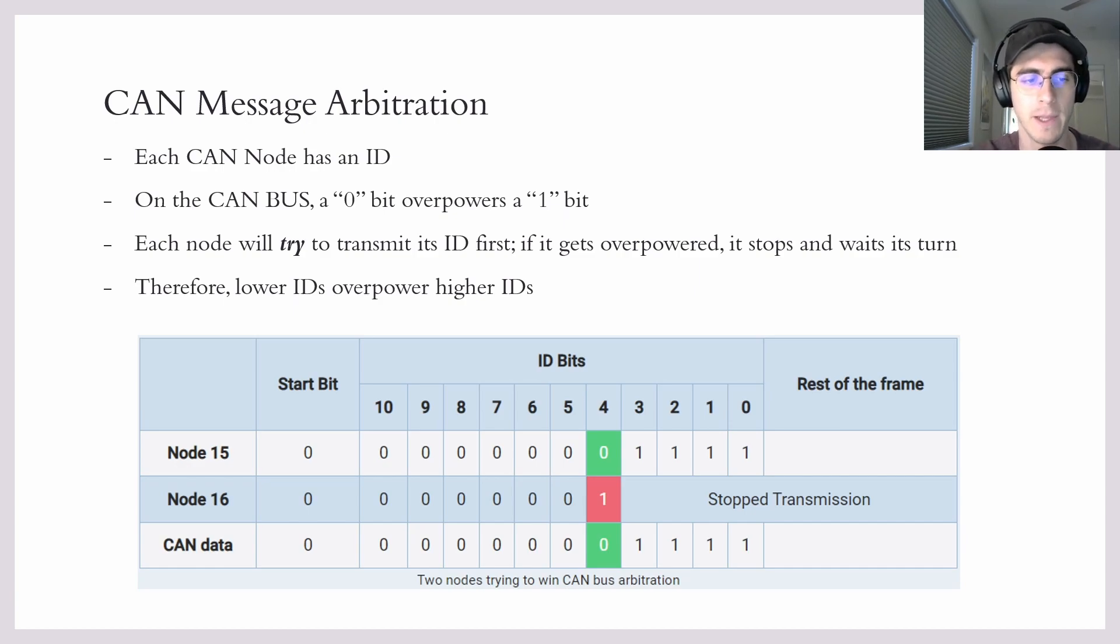So for example, let's say you have a node that has ID 15, and you have another node with ID 16. They're both going to start their transmissions. And by the time they get to bit 4, that is when their IDs will start to become different. And node 15, because it is smaller than 16, will have a zero here and overpower the 16.